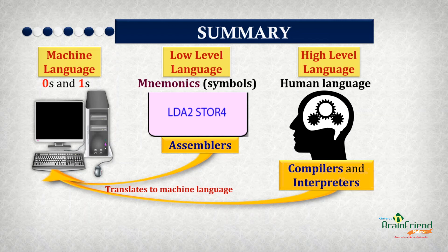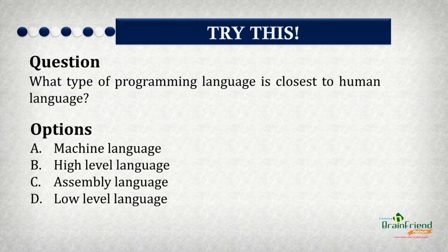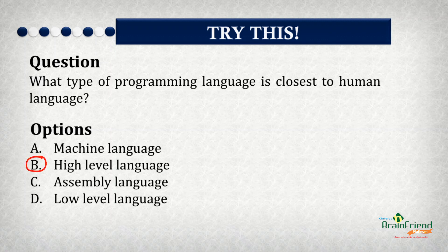Let's try out some exercises. Question 1: What type of programming language is closest to human language? The options are: A. Machine language. B. High-level language. C. Assembly language. D. Low-level language. And the correct answer is option B — High-level language.